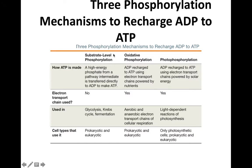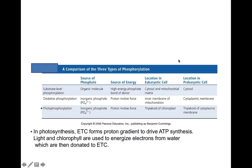For lecture exam 2, just remember substrate-level phosphorylation, which occurred in glycolysis and the Krebs cycle — this is where we make a little bit of ATP. In aerobic respiration, recall that most ATP is made by oxidative phosphorylation, which involves the redox reactions of the electron transport chain and the proton gradient driving massive ATP production by ATP synthase. I won't be asking about photophosphorylation on the lecture exam.